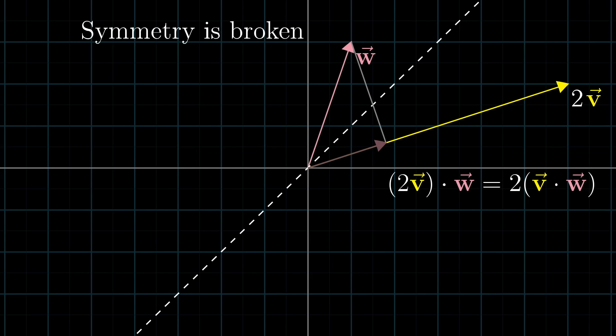But on the other hand, let's say you were thinking about v getting projected onto w. Well, in that case, the length of the projection is the thing that gets scaled when we multiply v by 2. But the length of the vector that you're projecting onto stays constant. So the overall effect is still to just double the dot product. So even though symmetry is broken in this case, the effect that this scaling has on the value of the dot product is the same under both interpretations.